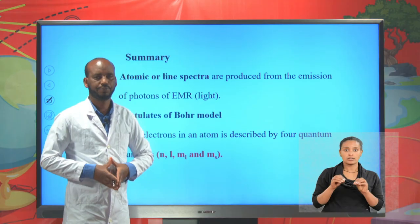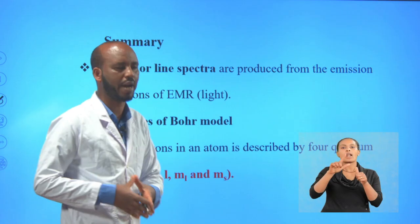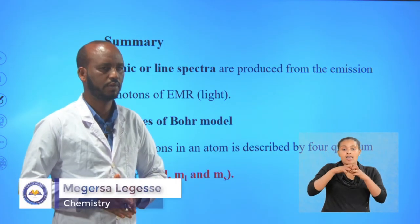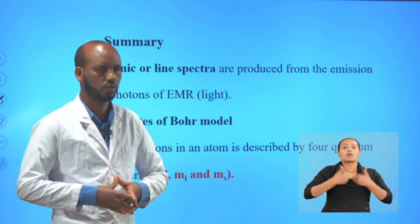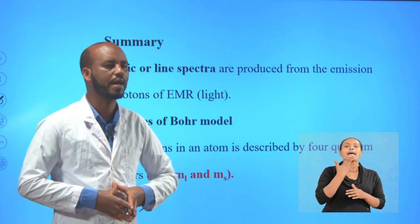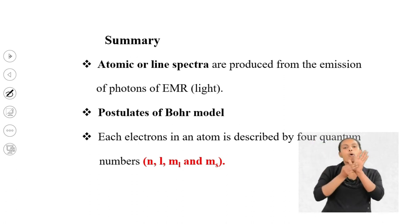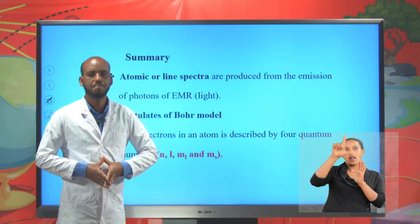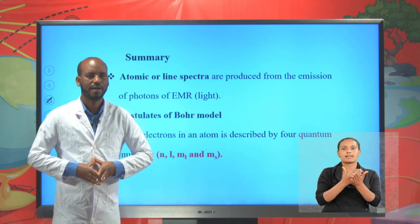In today's lesson, we learned about atomic or line spectrum — when an atom is vaporized or thermally or electrically excited, it emits light with a discrete frequency, and if this light is allowed to pass through a prism, it produces a line spectrum rather than a continuous spectrum. We also discussed the postulates of the Bohr model, the de Broglie equation, and the four quantum numbers: the principal quantum number, the azimuthal quantum number, the magnetic quantum number, and the spin quantum number. This brings us to the end of today's lesson. Until next time, goodbye.